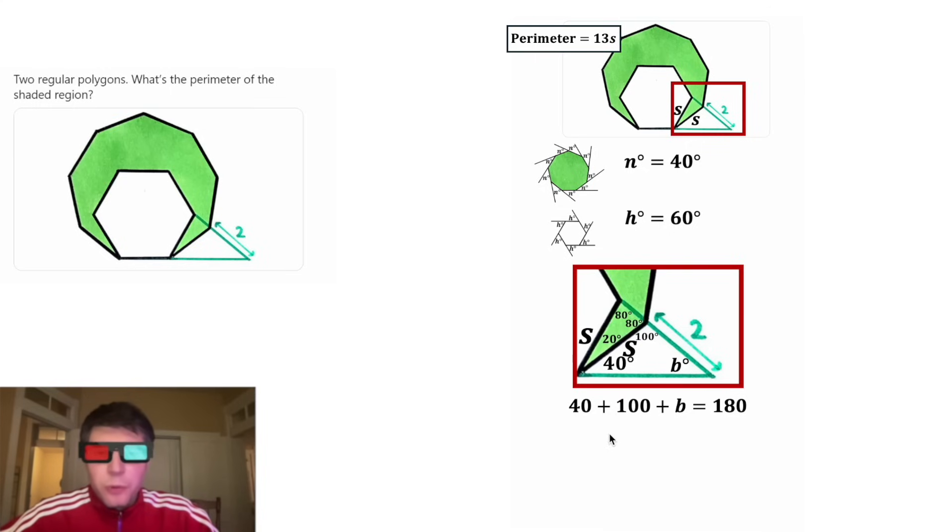Next, we can combine 40 plus 100 to get 140. And then we can subtract 140 from both sides. And that'll leave us with B is equal to 180 minus 140 is 40. So let's change this B degrees into 40 degrees.